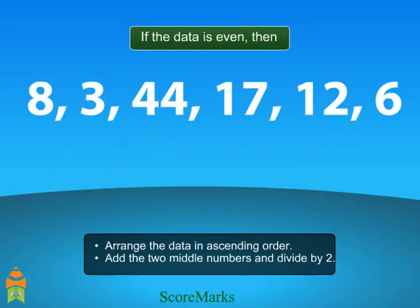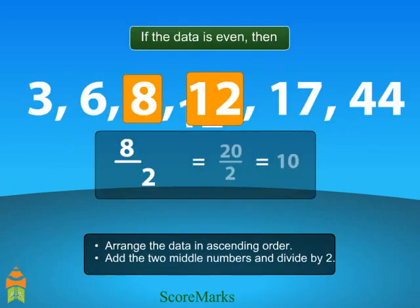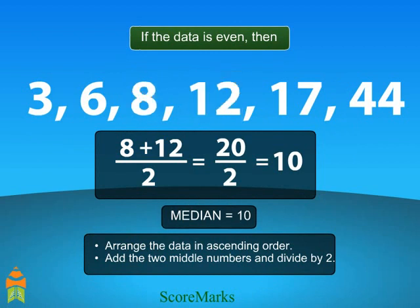But if the data is even, then arrange the data in ascending order. Add the two middle numbers and divide by 2. The number obtained is the median.